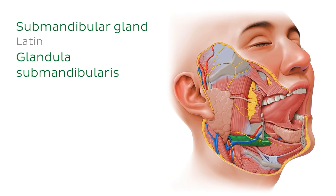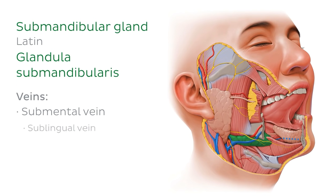In terms of venous drainage, the submandibular gland is mainly drained by the submental vein, which anastomoses — in other words, connects — with the sublingual vein.